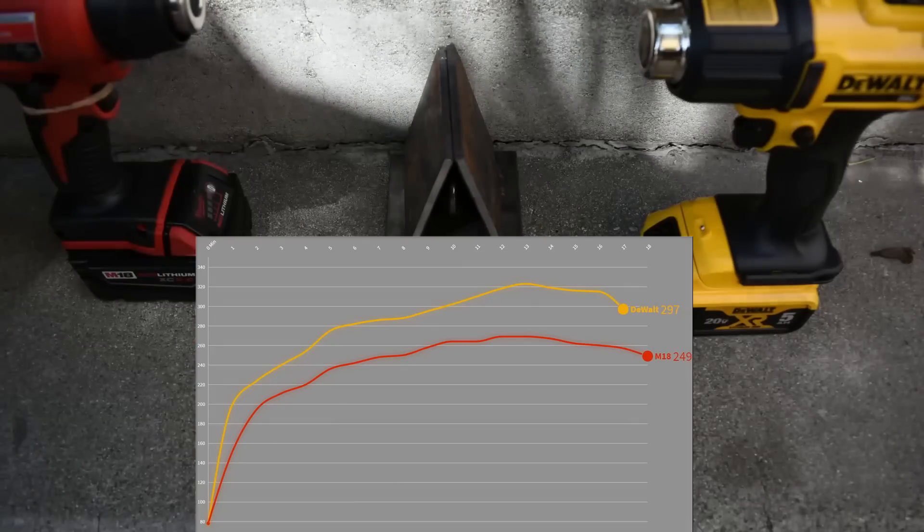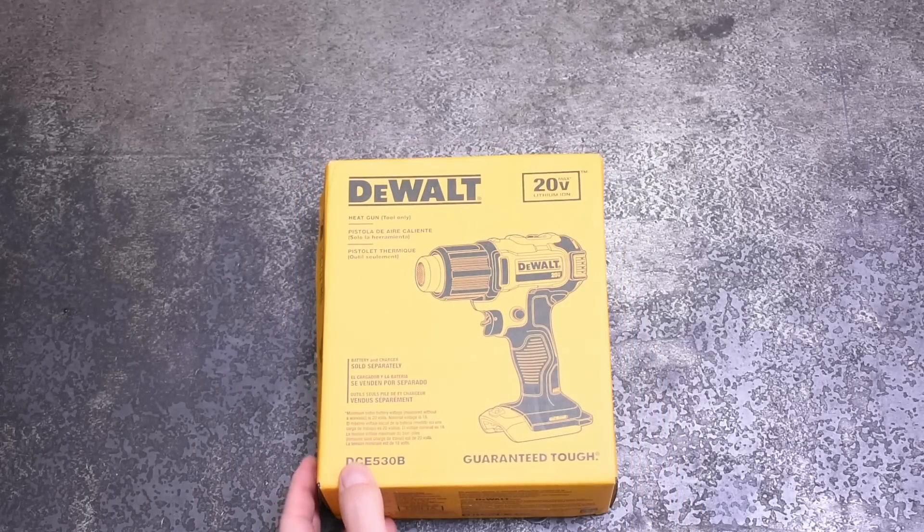But does it last as long as that heat just killing off the battery quicker? Let's see. Turns out only by about one minute. Neither of these tools lasting very long in a full 5 amp hour battery 17 to 18 minutes. So yeah use a corded when you can but DeWalt if you can't we reckon.